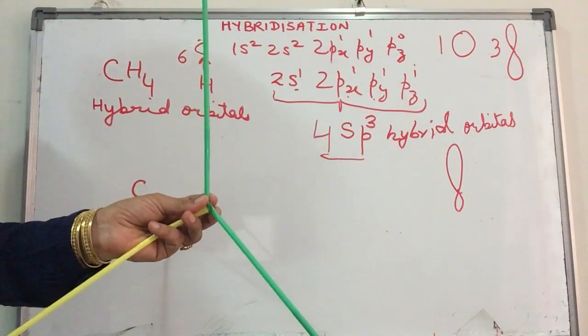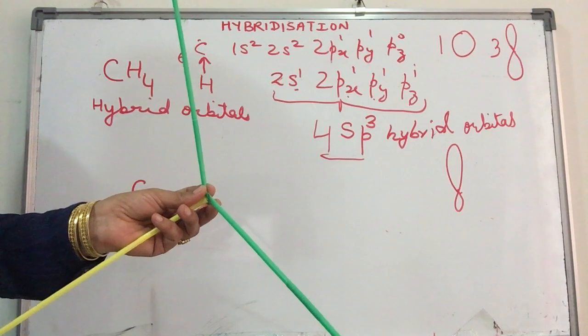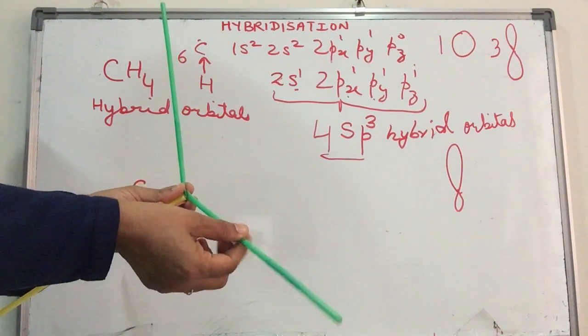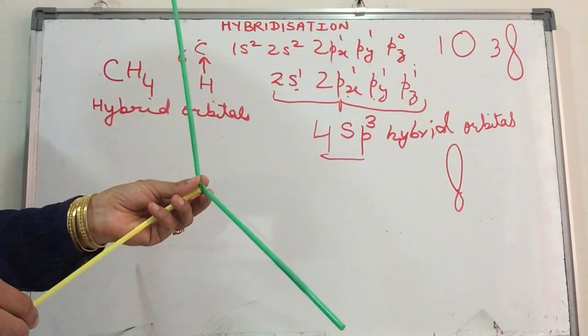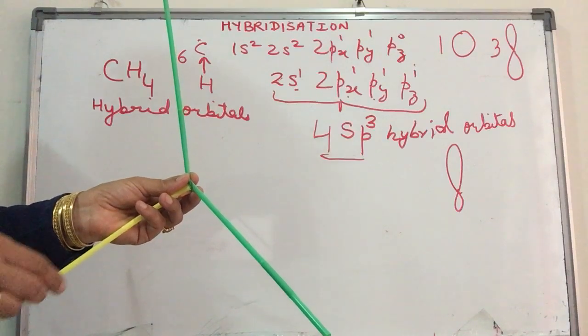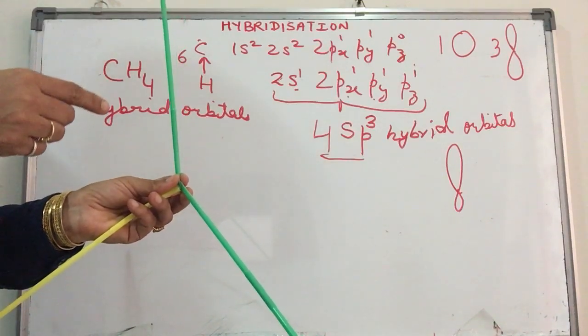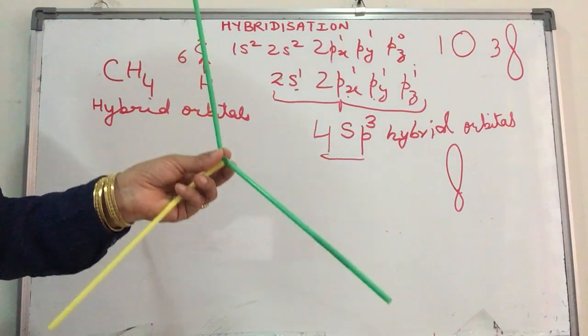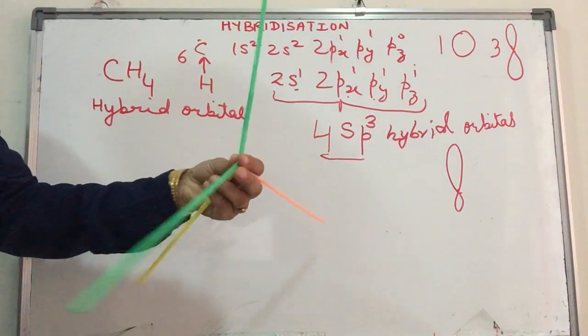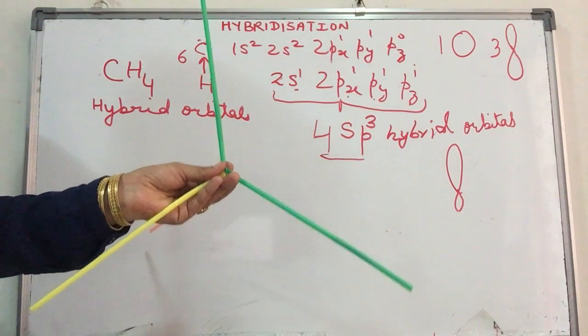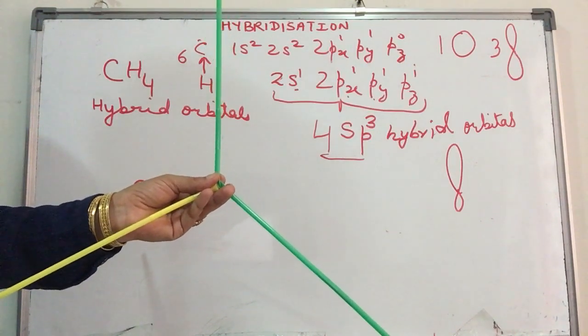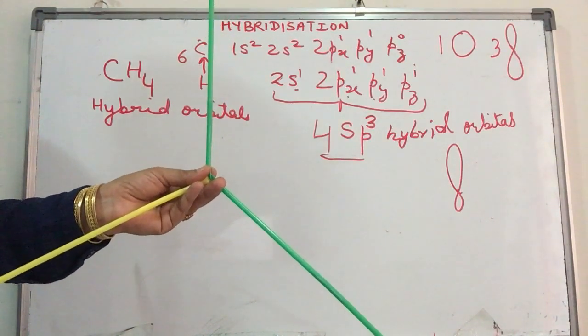This explains why experimentally we observe that all four bonds in methane are equally strong, and methane has a tetrahedral arrangement where bonds are aligned in three-dimensional space instead of having a plus shape.